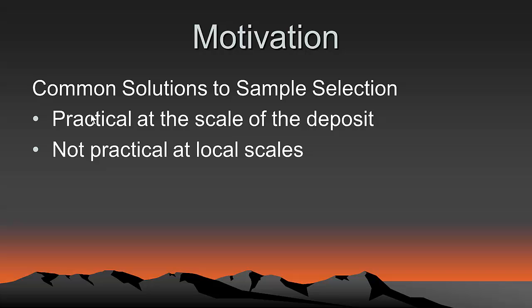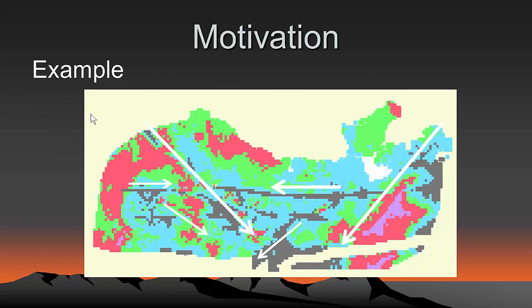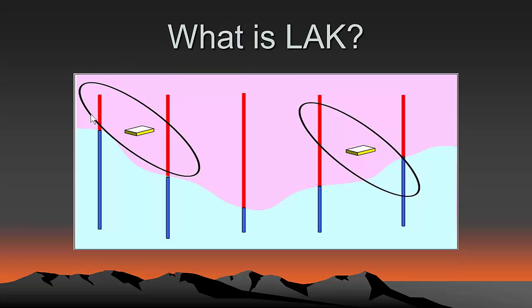But not practical at local scales. And what do we mean by local scales? For example, consider a blast in a bench, something like this picture here. All these white arrows show little patterns of mineralization that have specific directions. And as you can see from this, the directions are quite variable. That's what we mean by local patterns of mineralization, particularly where the directions change over small distances, maybe two or three blast holes. To interpret that manually is just not practical.